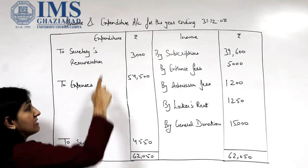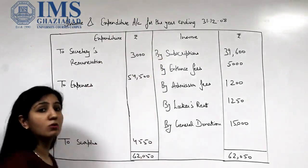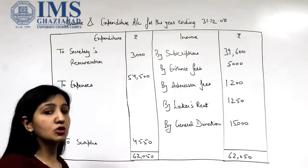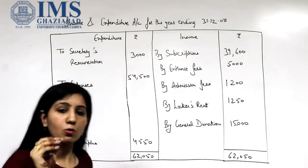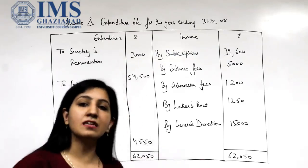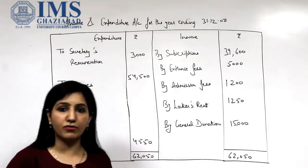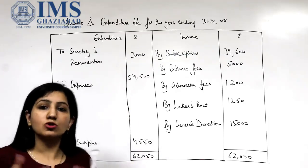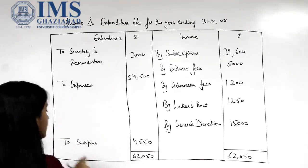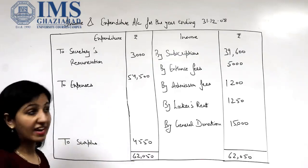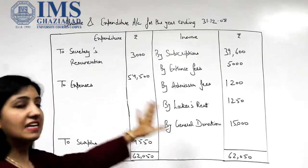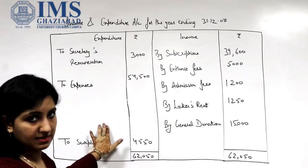Why are we not using the terminology profit and loss account then? Because a profit and loss account is used for those organizations which work for the purpose of earning profit. An NPO doesn't work for the purpose of earning profit — it works for social causes. So the terminologies used here are surplus or deficit. Just like a P&L, we record all the income and expenses here.